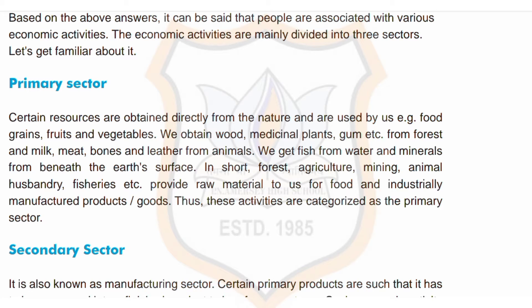The first is the primary sector. The economic sector which makes direct use of natural resources is known as the primary sector. Activities in this sector involve converting natural resources into primary products — for example, producing cereals, fruits and vegetables; obtaining wood, medicinal plants and gum from forests; obtaining milk, meat, bones and leather from animals; obtaining fish and various plants from water; and mining minerals from earth. We make use of all these natural products in economic activities like agriculture, mining, fisheries, animal husbandry, etc., and earn money. Moreover, these products also serve as raw materials for various industries.